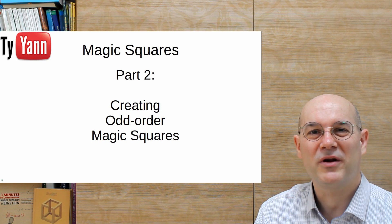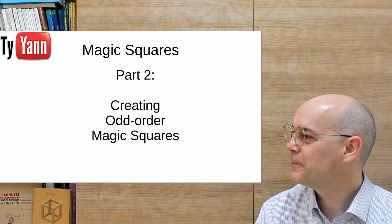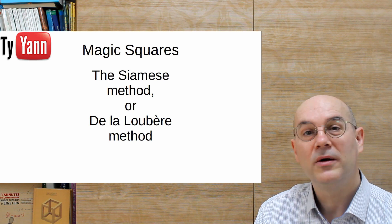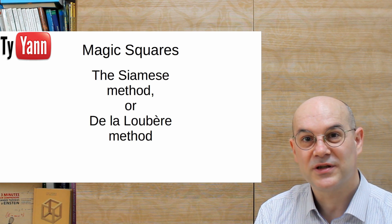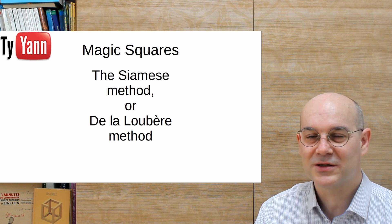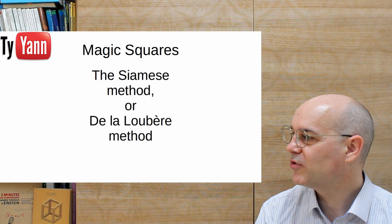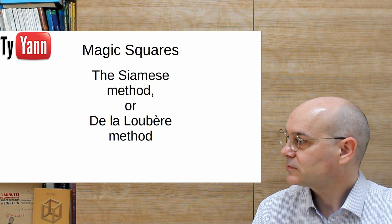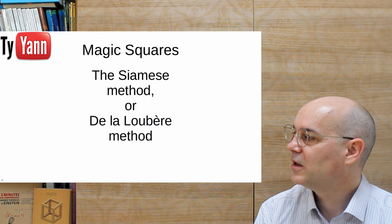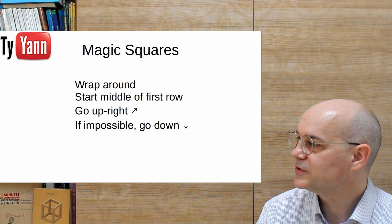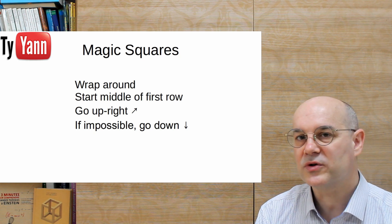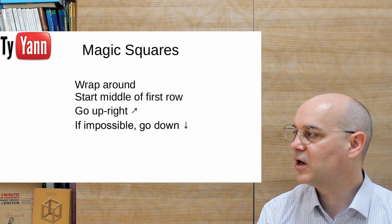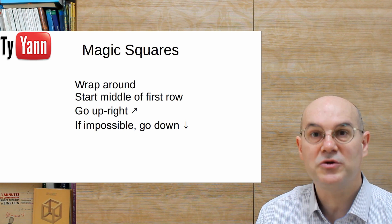The method we're going to use here is called the Siamese method or de la Loubert method, which is cool because for once I'm going to pronounce something properly. So here are the principles for this method. First principle, which is very general when you try to create magic squares, is you wrap around.